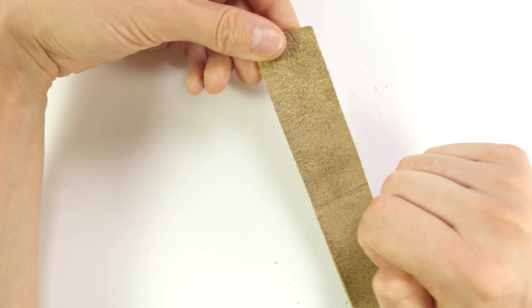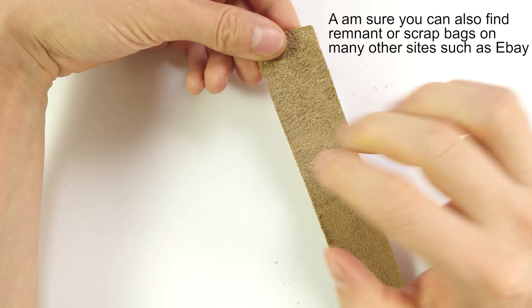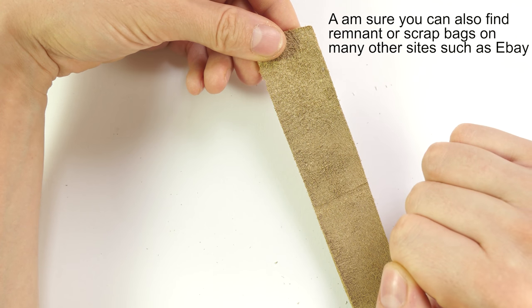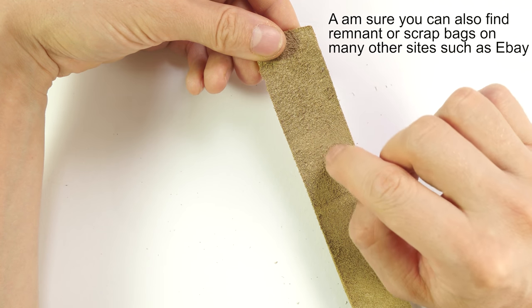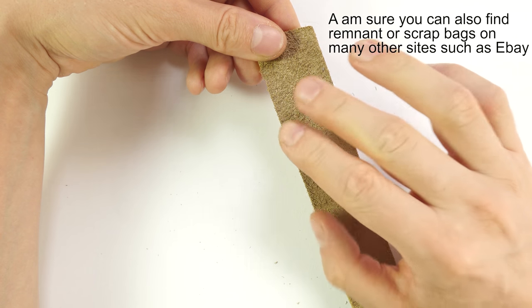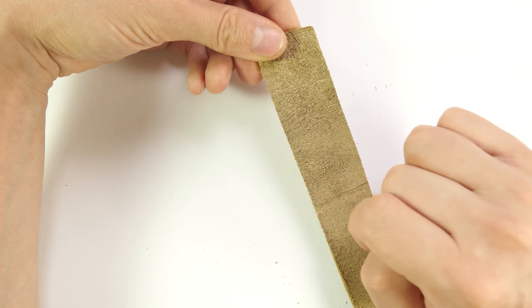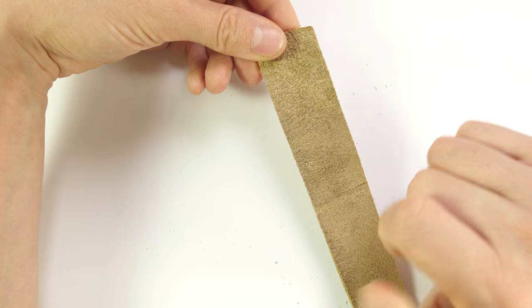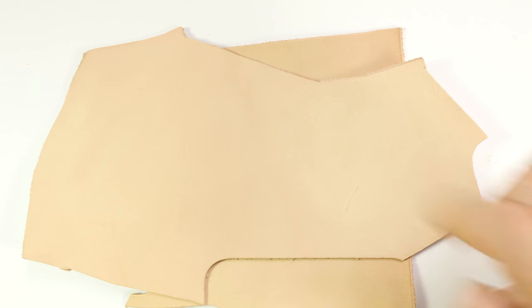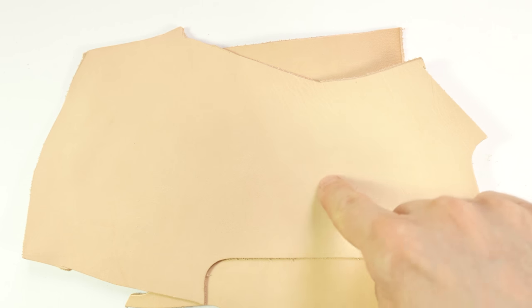Now you can also buy small remnant bags, which are scrap bags of leather from Tandy Leather for example. Those bags contain quite a bit of leather that you can use for polishing. It is affordable and you get quite a decent amount. So vegetable tanned remnant bags are available from Tandy. These for example are the leather remnants available from Tandy Leather. You get these irregular pieces, which are quite appropriate for smaller projects as well as polishing.